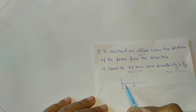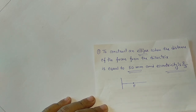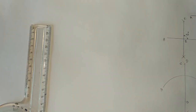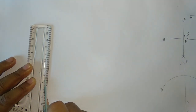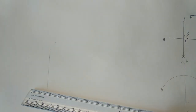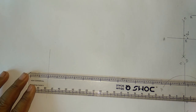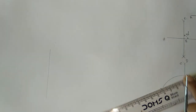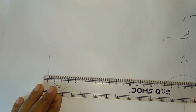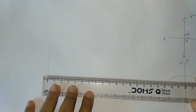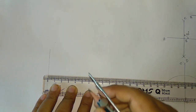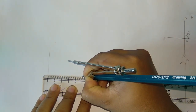First of all we have to find out the eccentricity 2 by 3, so we are going to divide this into 5 equal parts. After that we are going to draw the point of eccentricity and then draw the ellipse. We will draw a vertical line AB, and a line perpendicular to AB, and also mark the focus.